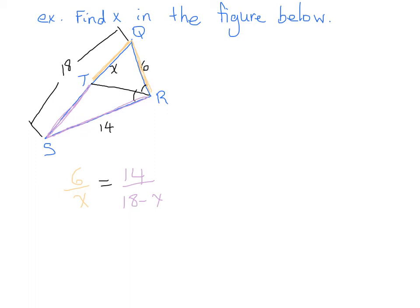So even though we have that 18 minus X there, we still have two fractions or two ratios, and we can cross multiply here. So let's go ahead and cross multiply. On the left we get 6 times 18 minus X, and on the right side we get 14 times X.